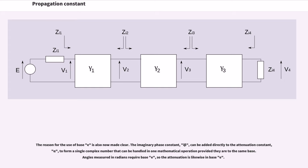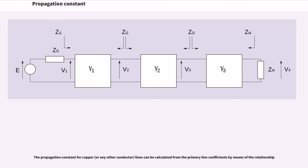The reason for the use of base e is now made clear. The imaginary phase constant, i*beta, can be added directly to the attenuation constant, alpha, to form a single complex number that can be handled in one mathematical operation provided they are to the same base. Angles measured in radians require base e, so the attenuation is likewise in base e. The propagation constant for copper lines can be calculated from the primary line coefficients by means of the relationship gamma = sqrt((R + i*omega*L)(G + i*omega*C)).